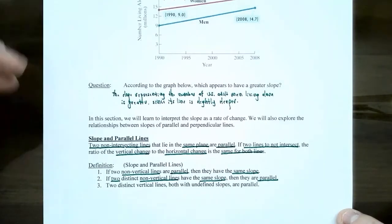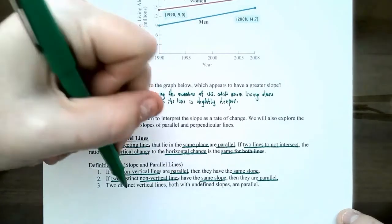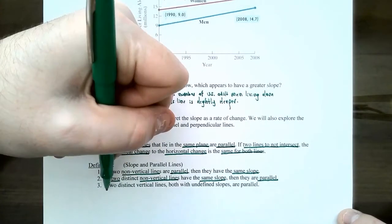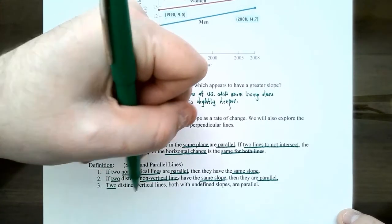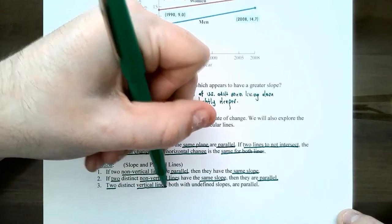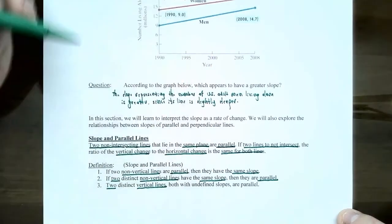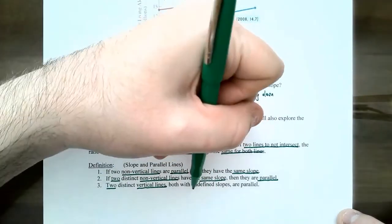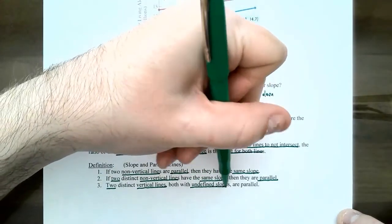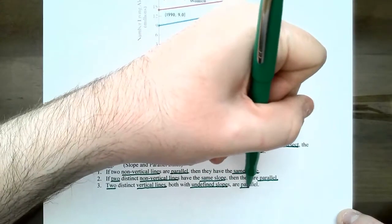If you have two non-vertical lines with the same slope, then they must be parallel. And in a special case, if you have two vertical lines that have undefined slopes, then they are also parallel.